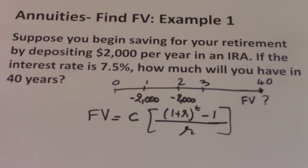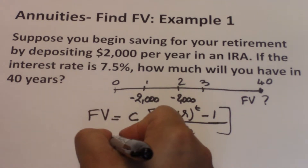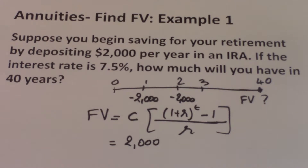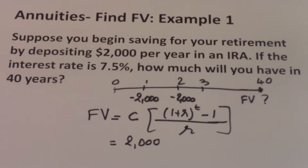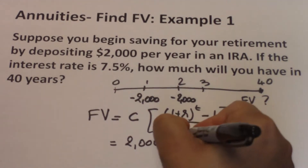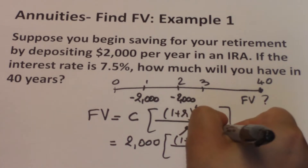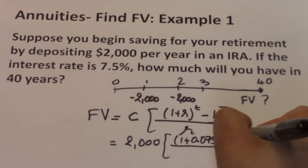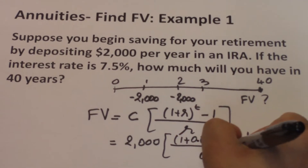We need to identify our variables and input them into the calculator. C is $2,000 — the amount you're paying every period. The deposits are yearly, so R and T also have a yearly frequency. The interest rate R is 7.5%, which we input as a decimal: 0.075. T is 40 years. So the formula becomes $2,000 times (1 plus 0.075) to the power of 40, minus 1, divided by 0.075.